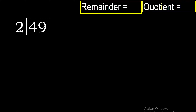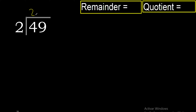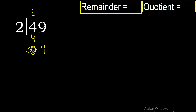49 divided by 2. 4 is not less than 2, therefore with 4. 2 multiplied by 3 is 6, excessive. Multiplied by 2 is 4, 4 minus 4 is 0. Eliminate 09.